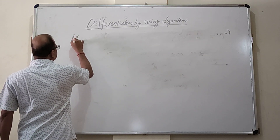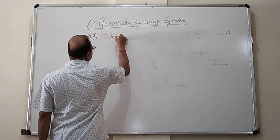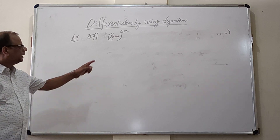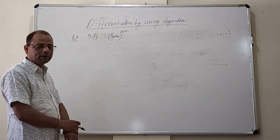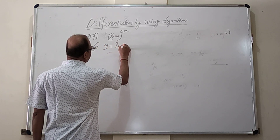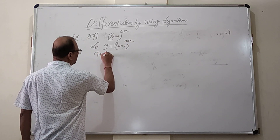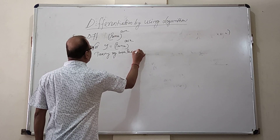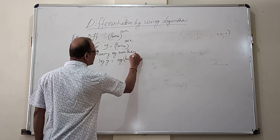Another example — Example 2: Differentiate sin x to the power cos x. This is also a variable-to-the-power-variable form. Let y equal sin x to the power cos x, then taking log both sides, same way as before.